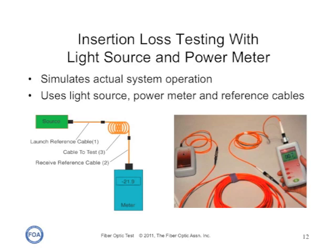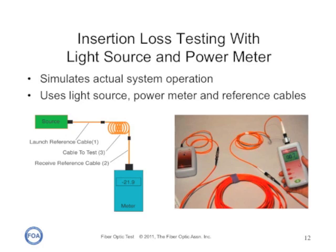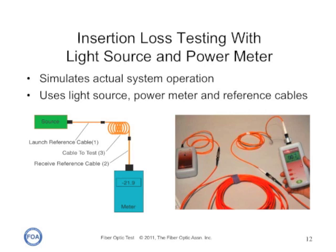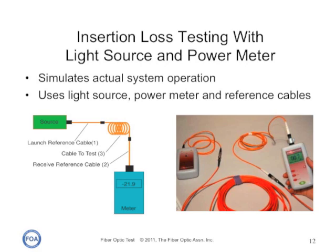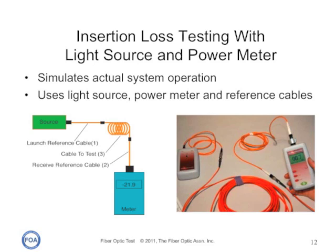Insertion loss testing uses the power meter and a matching light source to simulate actual system operation and measure the dB loss of the link. The light source should be similar to the source used in the transmission system — either an LED or a laser — and you use reference cables to mate up to the cable plant you're testing in order to condition the light going into the system and test the connectors on each end of the cable plant.